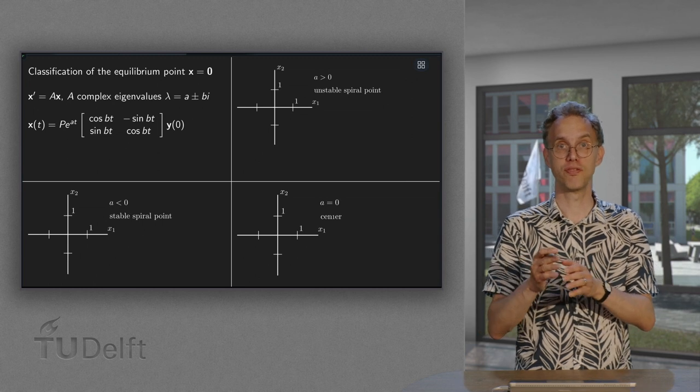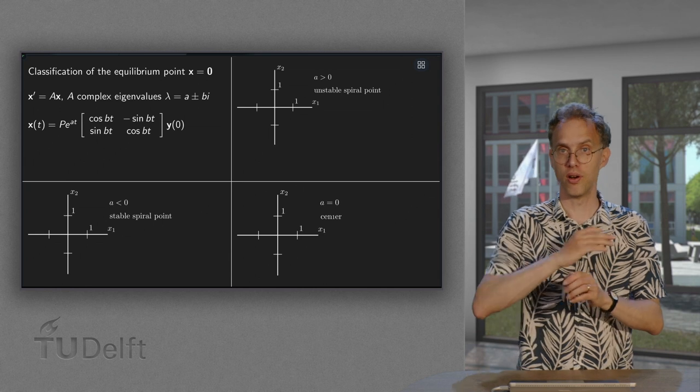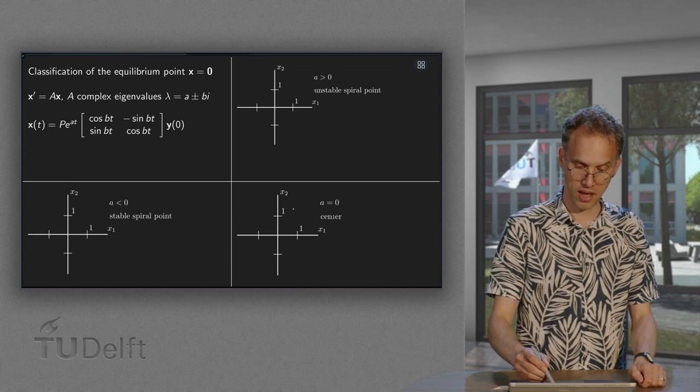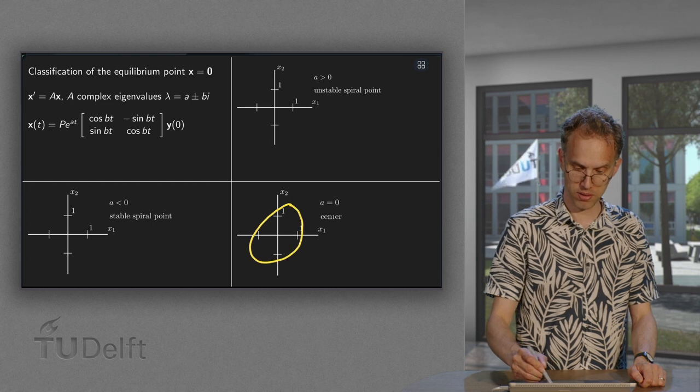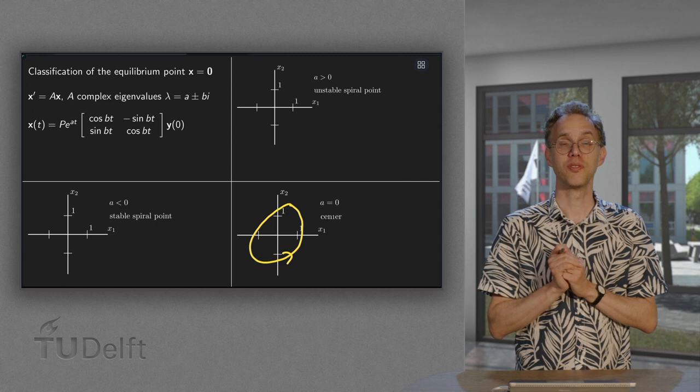So we rotate, we do not get further away or closer. It is something more like an ellipse or something like this. It is supposed to be an ellipse or a circle. So that is what we have in that case.